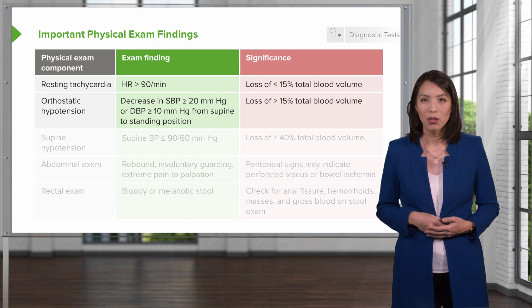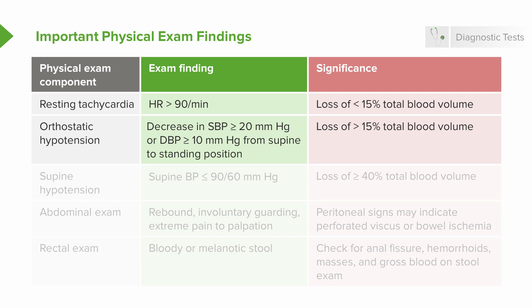Check for orthostatic hypotension. If the patient meets parameters showing a significant drop in blood pressure from supine to standing, this indicates they have already lost greater than 15% of their total blood volume — an already concerning finding.